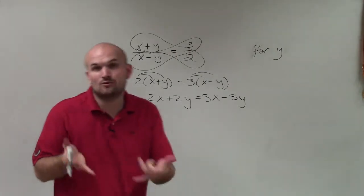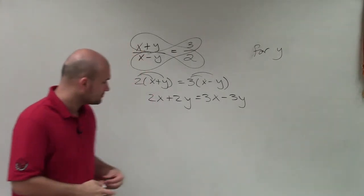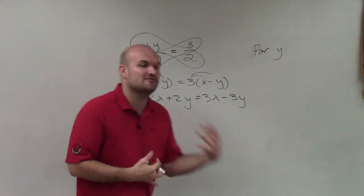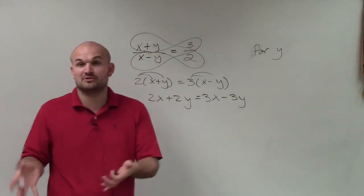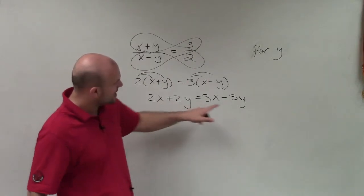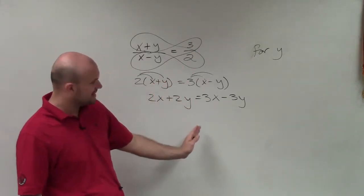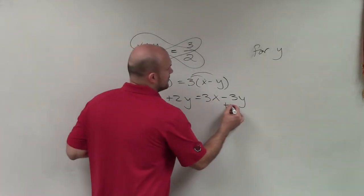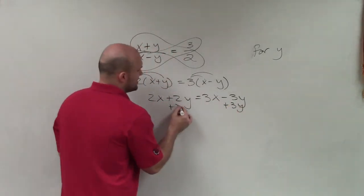Now, to solve for y, I need to get the y variable by itself. So to do that, I need to isolate it on one side. And when I'm solving for variables, I like to solve so the variable is going to be positive. So if I subtracted 2y on both sides, that's going to eliminate that 2y, but then that's going to make that a negative 5y. So I'm going to want to add 3y to both sides.